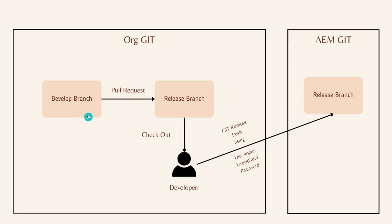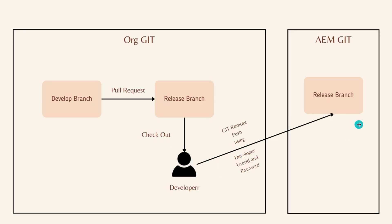Once you are convinced the develop branch is working, you want to push the code onto the release branch for SIT testing. You create a pull request from the develop branch to the release branch and merge it. Then one developer can check out the release branch from the organizational Git and use Git remote push — the AEM Git is the remote. This developer sets up the AEM Git as the remote and pushes the release branch code onto the AEM Git using the Git remote push command, using their user ID and password. The exact commands are covered in Adobe's documentation — I will put the link in the description. Here I am just telling you the logical flow.